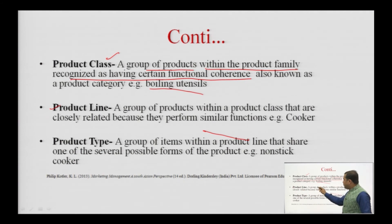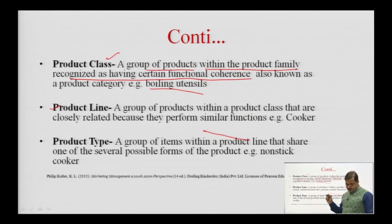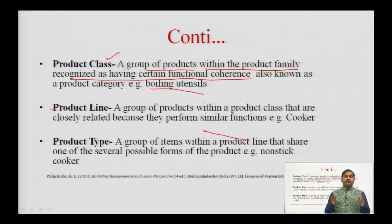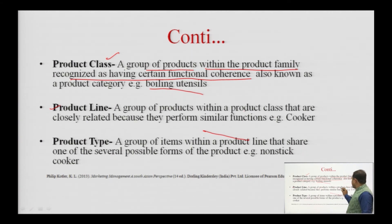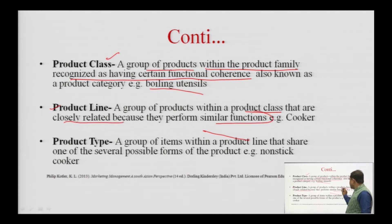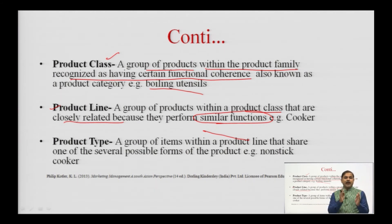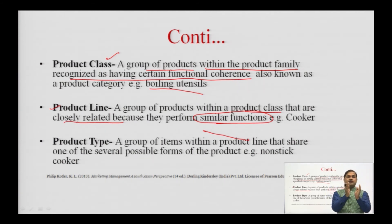The next level is product line — a group of products within a product class that are closely related because they perform a similar function. Because of the similarity in function they are clubbed together. So we have narrowed down from cooking, to utensils, to boiling utensils, and within boiling utensils to one category: within boiling, I require a cooker for myself.